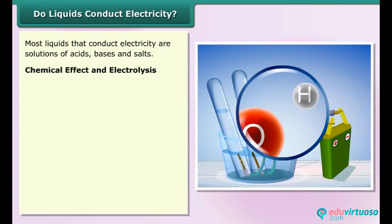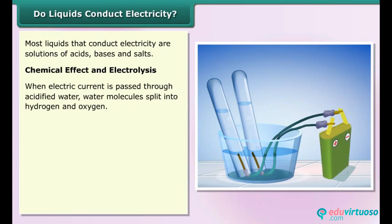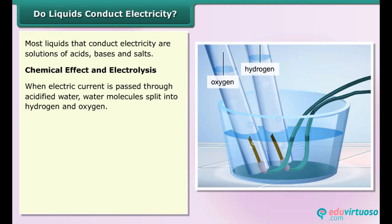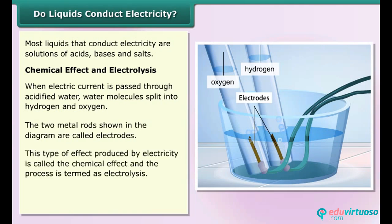When electric current is passed through acidified water, water molecules split into hydrogen and oxygen. The two metal rods shown in the diagram are called electrodes. This type of effect produced by electricity is called the chemical effect and the process is termed as electrolysis. Can we use pure water in the place of acidified water?